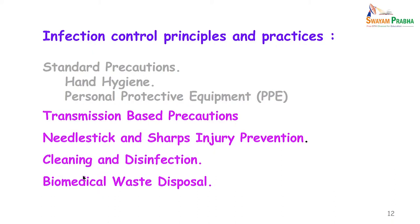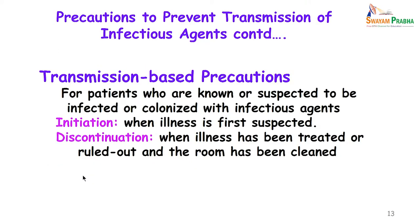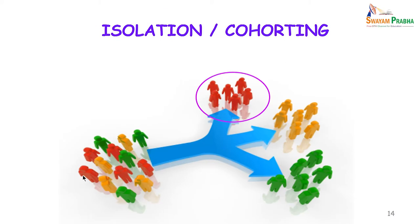Transmission-based precautions are applied when a patient is known or suspected to harbour an infectious agent. Initiate these when illness is first suspected and discontinue when the illness has been treated, ruled out, or the room has been cleaned. Whenever you suspect infection, ideally place the patient in an isolation room. If isolation is unavailable, place the patient at the corner of a ward. If multiple patients have the same infection, cohort them together at one site.